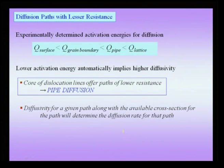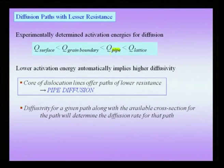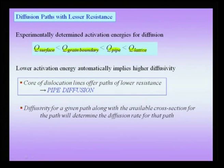If there are defects present in the crystal — even in a perfect single crystal we tolerate vacancies — there are other defects: a surface (inevitable), grain boundaries in polycrystalline material, and dislocations which lead to pipe diffusion. Experimentally observed activation energies show that the surface has the lowest activation energy for diffusion, grain boundaries have slightly higher energy, dislocation pipe diffusion slightly higher still, but lattice diffusion causes the maximum activation energy.